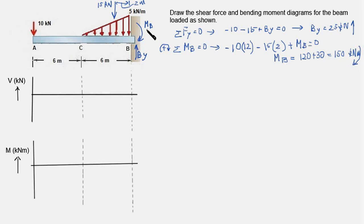MB equals 150 kilonewton meters in the clockwise direction, confirming the direction shown. BY is 25 kilonewtons and MB is 150 kilonewton meters.